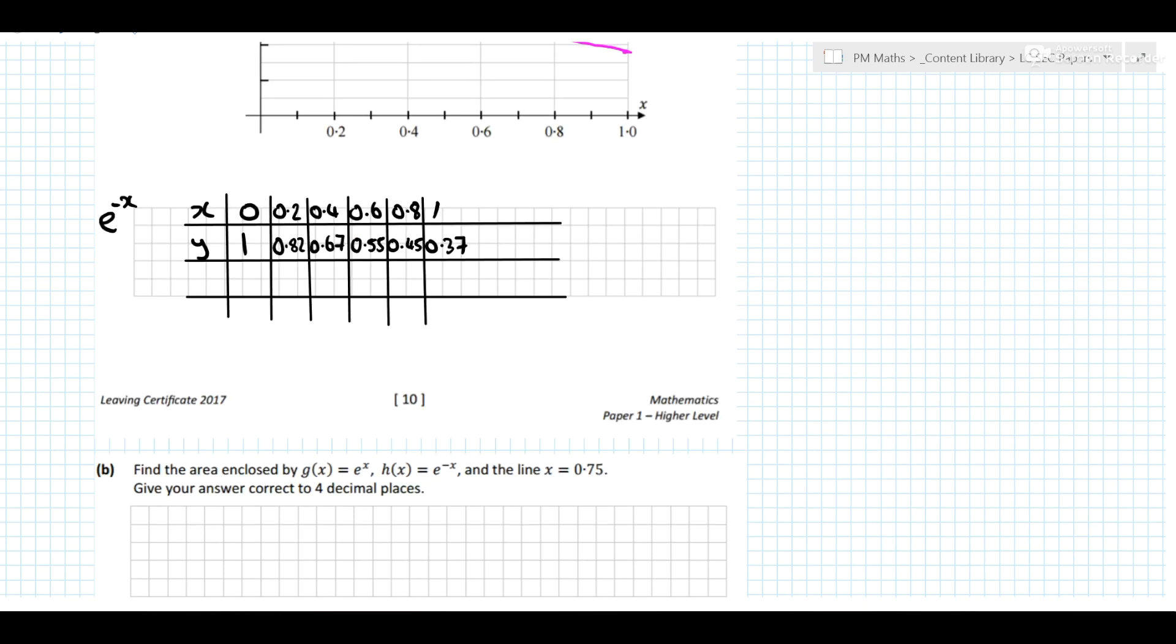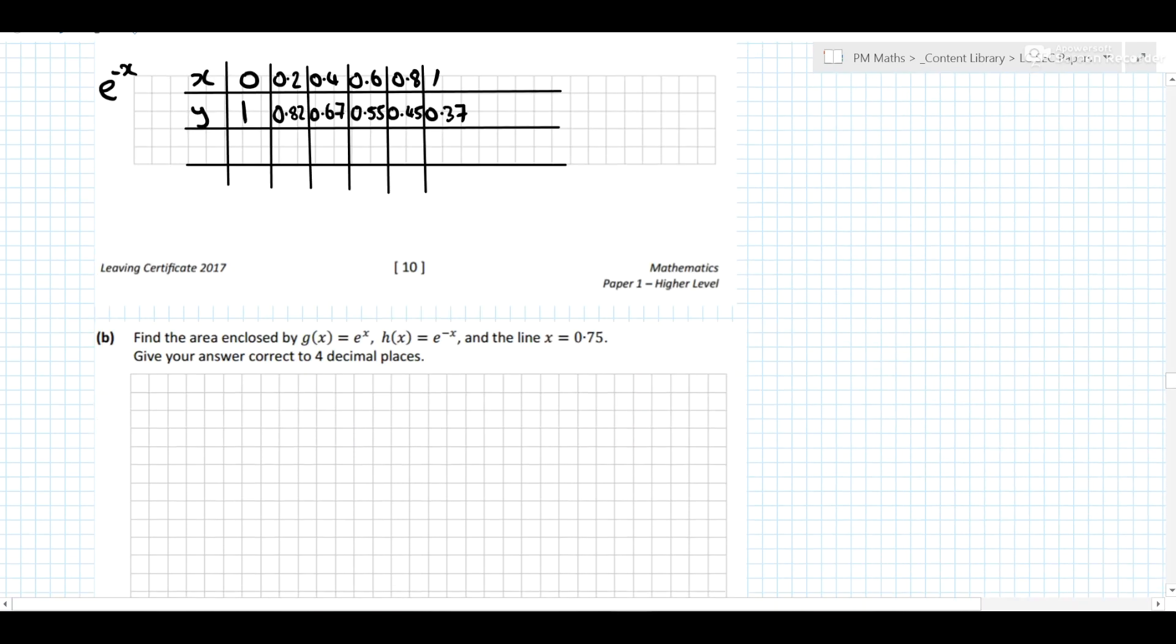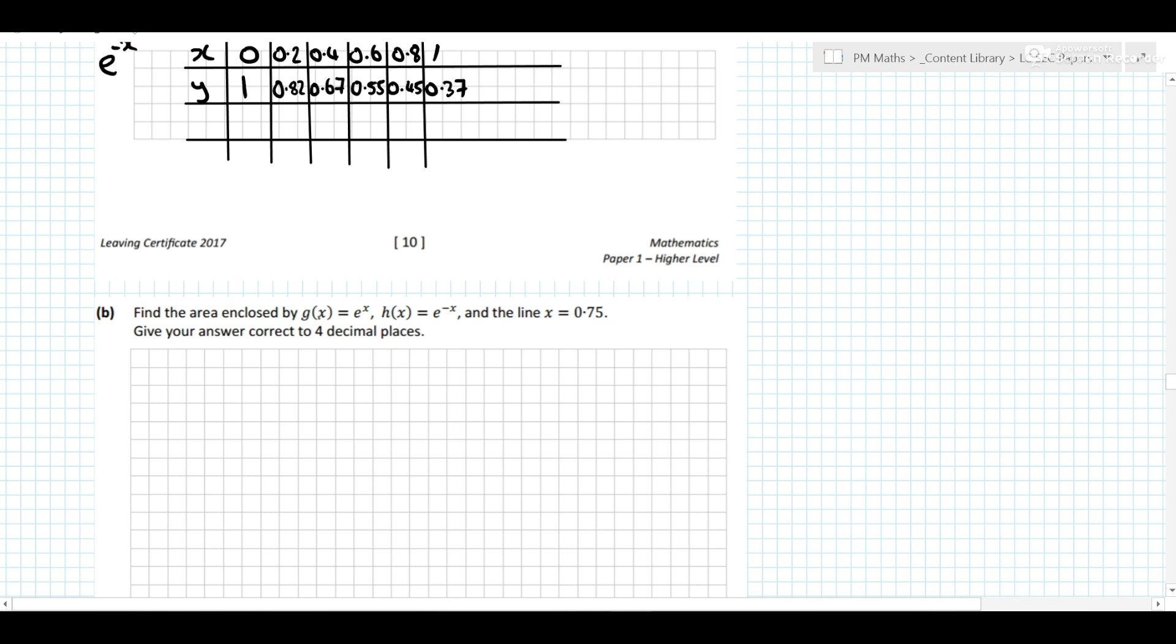So for the rest of the question then, it asks us to find the area enclosed by g(x) and h(x) and the line x = 0.75. So is this a vertical or a horizontal line?